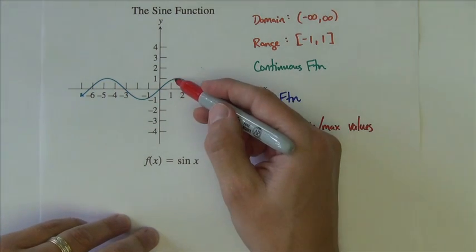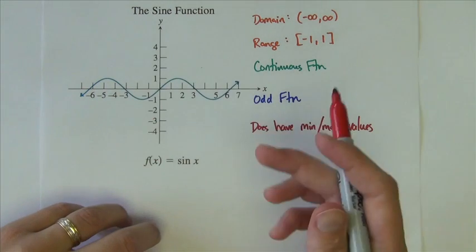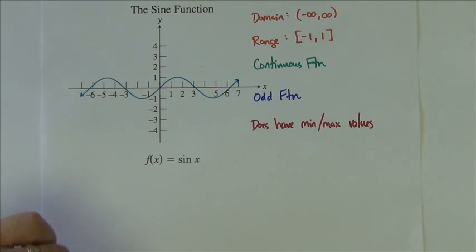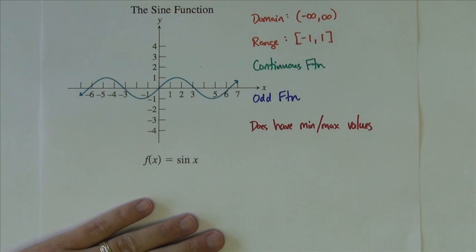It's got both high points, low points, and a bunch of them, an infinite number of minimum and maximum points.